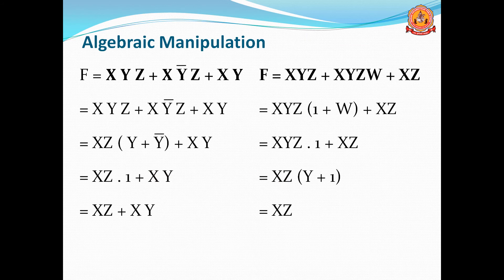In algebraic manipulation, we use different laws that we have studied to reduce the Boolean expression. Here is the first example: f = xyz + xy'z + xy. We need to reduce this expression. Taking the first two terms, x and z are common, and the differing part is y + y'.